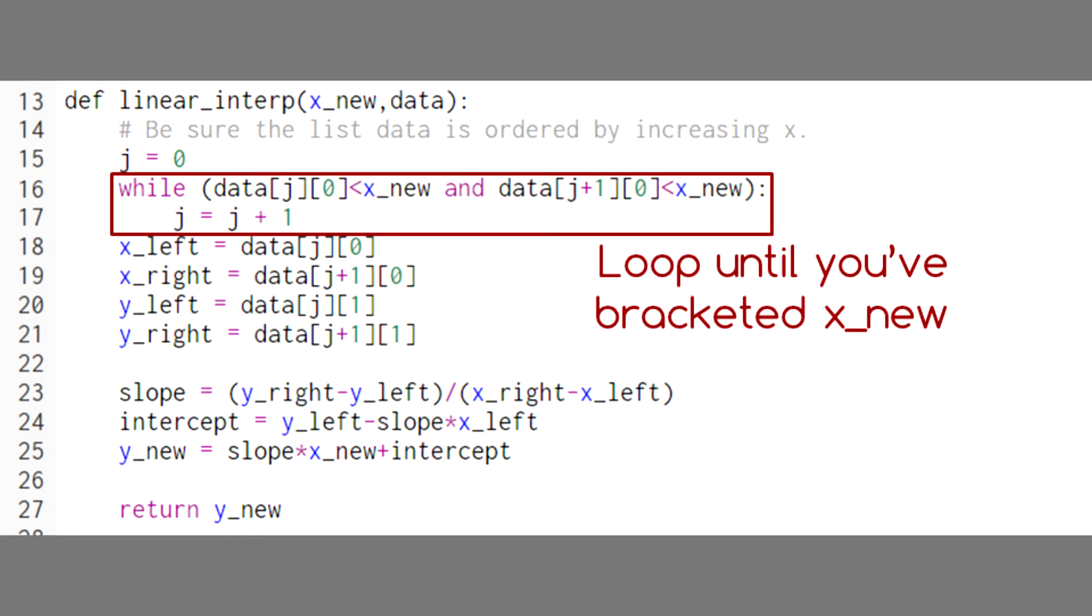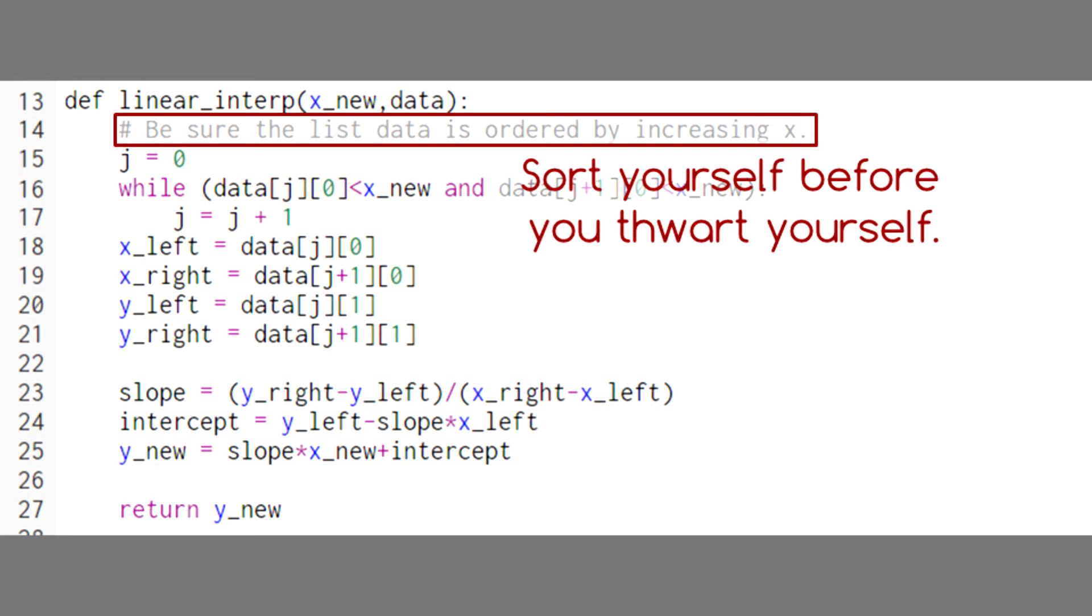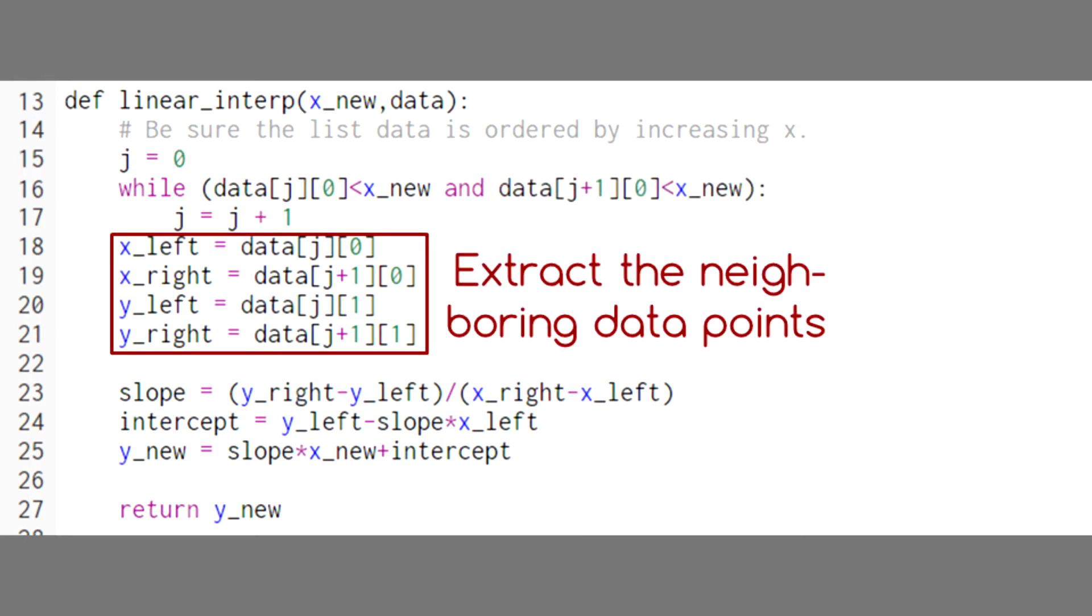First, we find which two data points in the list of data are located to the left and right of our x value. By the way, this means your data needs to be sorted in order of increasing x. Then we extract the values of x and y for those neighboring data points.